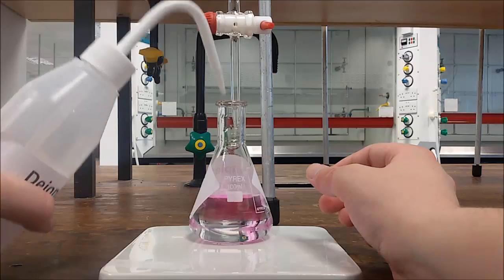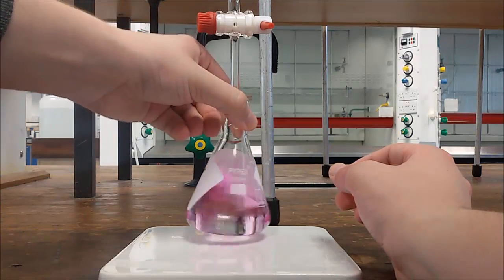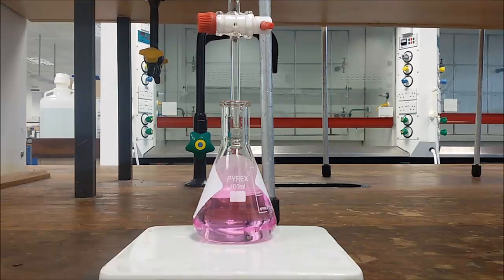You have now reached the endpoint. Read the volume from the burette and subtract the initial value, just like in the rough run.